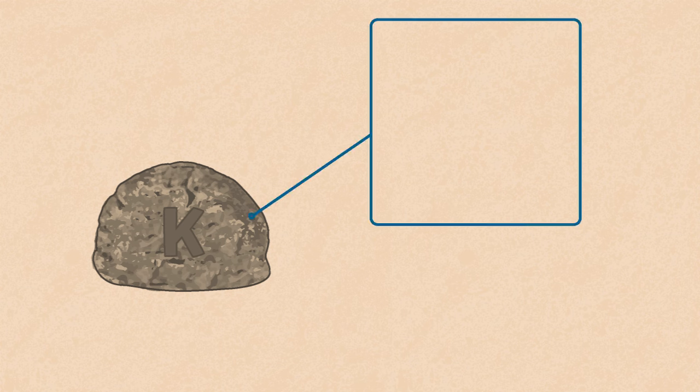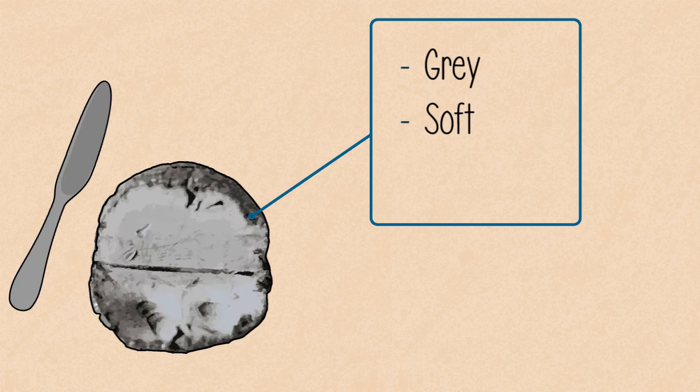Potassium, on the other hand, is gray, relatively soft, and reacts vigorously with oxygen and water.